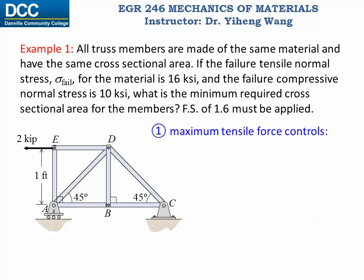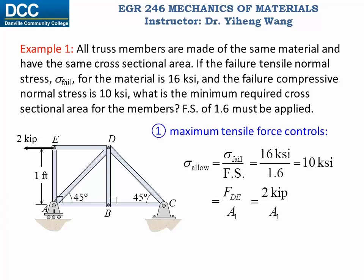Situation one: if the maximum tensile force controls, then the allowable tensile stress controls, which equals the failure tensile stress divided by the factor of safety — 16 over 1.6 — giving 10 ksi (kilopounds per square inch). Setting this equal to force over cross-sectional area A1, which is 2 kilopounds divided by A1, gives us A1 equal to 0.2 square inch.